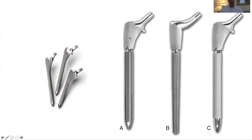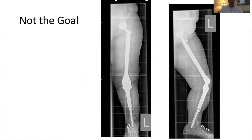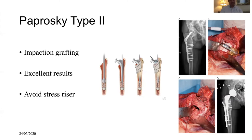Modularity was introduced to the extensive porous coat, allowing separation of the stem from the metaphysis to better restore leg length and offset. The workhorse of revision surgery is the modular taper stem, where the taper engages in the diaphysis — you have a proximal body and can adjust length, version, and offset. However, the goal is not to end up with mega-procedures. We want to be as conservative as possible, and that's where impaction grafting for type 2 cases should certainly be considered.